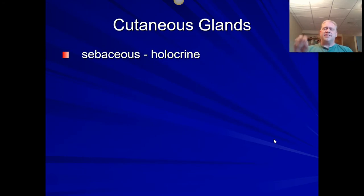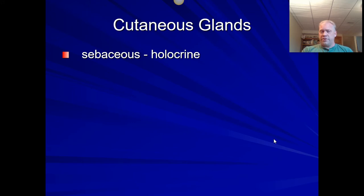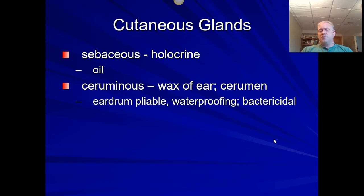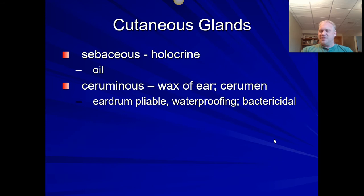We have cutaneous glands found within the skin layers themselves, and they come in different types. Holocrine glands are the oil glands more commonly associated with acne — they fill up and rupture. Ceruminous glands are found only in the ear canal, making earwax, which is actually antimicrobial and helps keep your eardrum pliable. People with swimmer's ear have so much water in the ear canal that cerumen can't build up, so the eardrum becomes brittle and sore — basically, their ears are too clean.